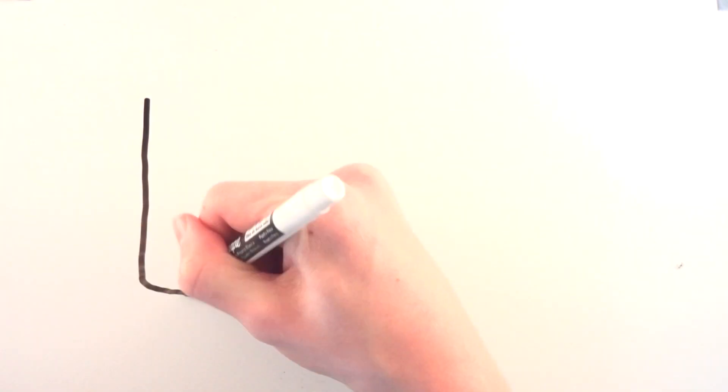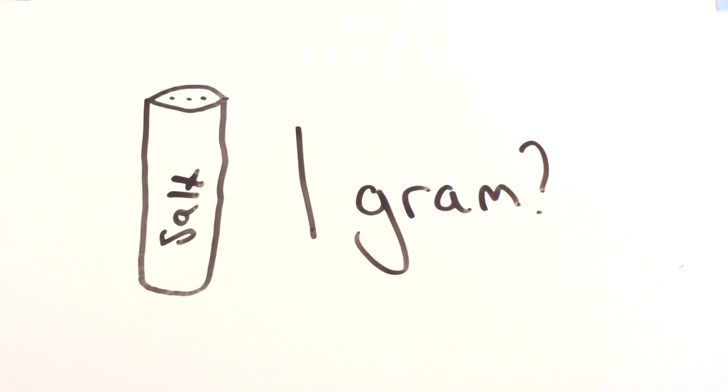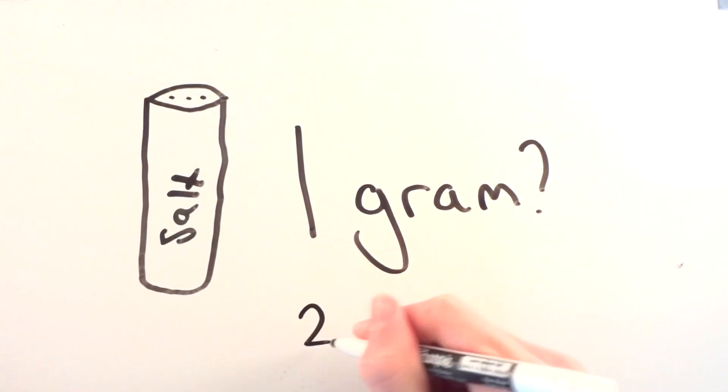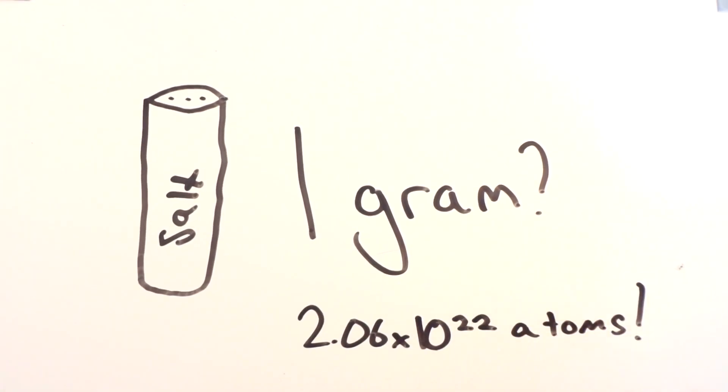So lastly, how many atoms do you think is in 1 gram of salt? Next time you put salt on your food, think about this. For every 1 gram of salt you're applying to your food, you're adding 2.06 times 10 to the power of 22 atoms onto your plate.